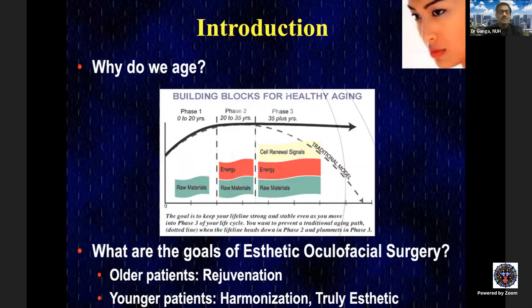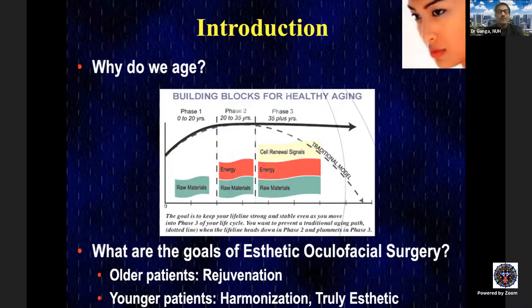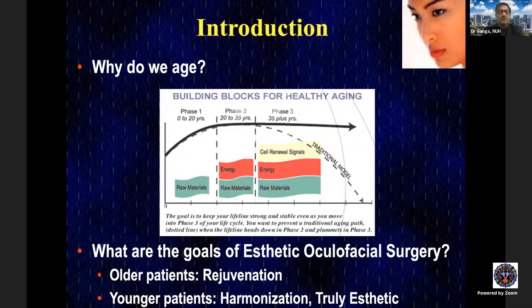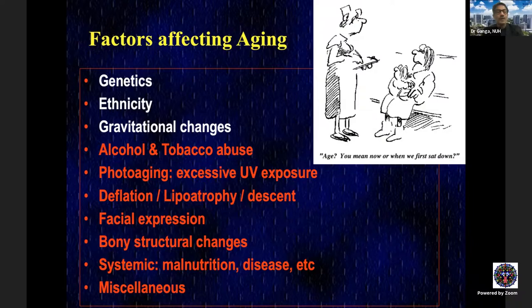Aging begins the day we are born. Building blocks develop positively until about 20 to 35 years of age, after which decline begins. The peak of health and beauty is around age 35. Three key factors affect aging that we generally cannot control: genetics — we tend to age like our parents; ethnicity; and gravity, as the price we pay for walking upright.